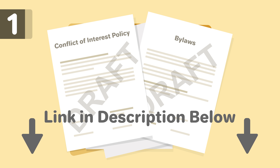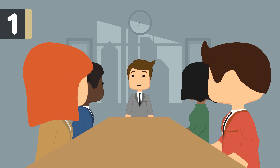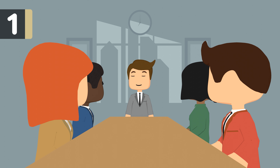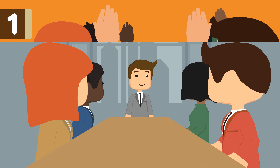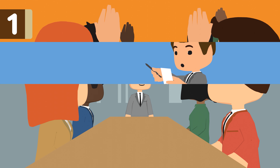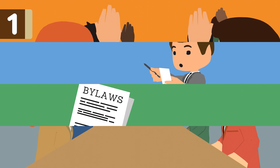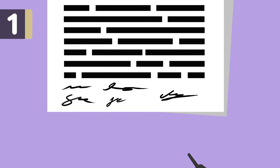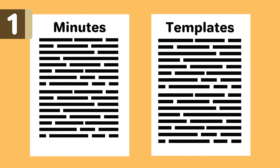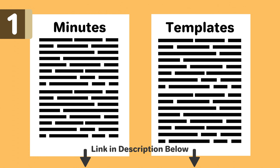We have templates of both bylaws and conflict of interest policy linked in the description below. An organizational meeting is the first official meeting of your nonprofit. Some things discussed in a typical organizational meeting include taking attendance to show you have a quorum, appointing temporary officers and chairmen, adoption of bylaws, and adoption of the conflict of interest policy. It's important to record minutes of the meeting and have it signed by all attending directors. We have corporate minutes templates linked below to help you get started.